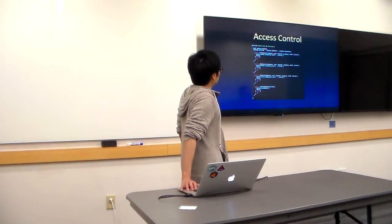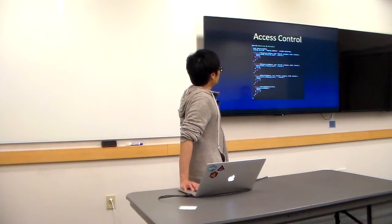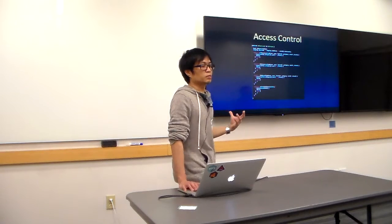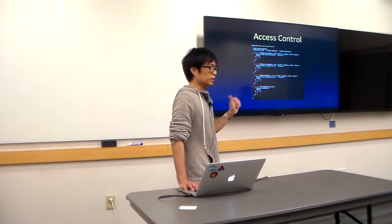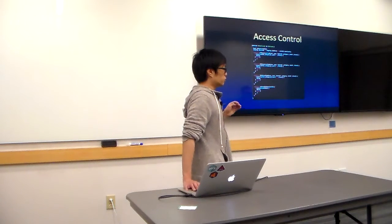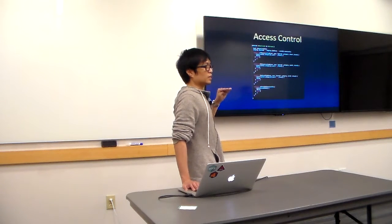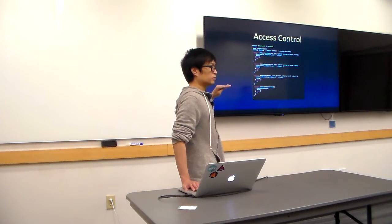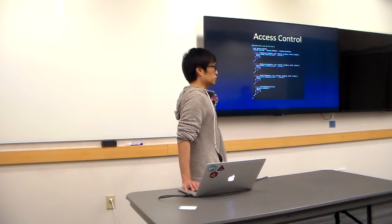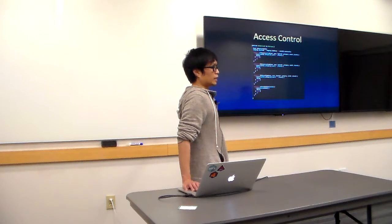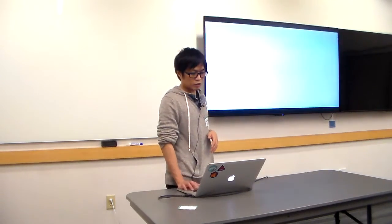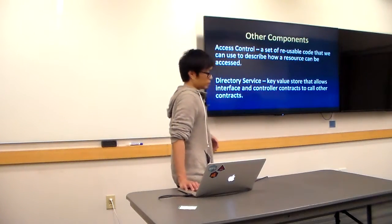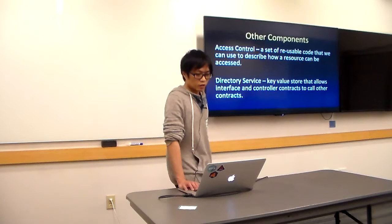There's also user-level access control where you define users' accounts with integer access levels. If your access level is one, you can only access resources that allow level-one access. A user with access level four can access anything at levels four, three, two, or one — anything below their level. So you can make it granular. There are other access control patterns which will be shared on GitHub soon as part of the boilerplate project that showcases the toolchain.